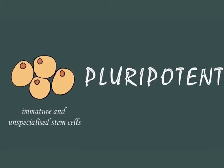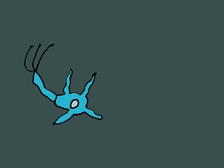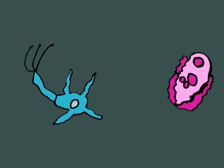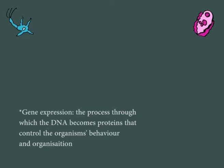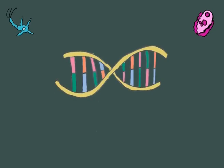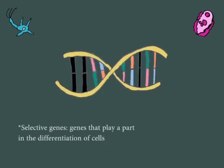Pluripotent means that they can differentiate into any type of cell. To acquire the attributes that will make them become nerve cells or pancreatic cells, for example, they have to express the genes that will give them their characteristics, like their shape or the enzymes they produce. Internal and external signals will turn selective genes on or off.